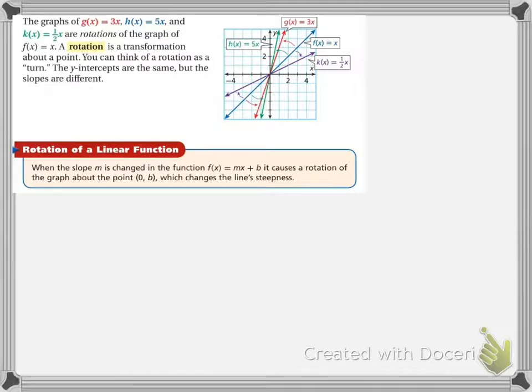Let's talk about a rotation. A rotation changes its steepness. Depending on where it goes from, it could be rotating around its y-intercept. A rotation is a transformation about a point. The rotation is around the y-intercept at 0, 0.